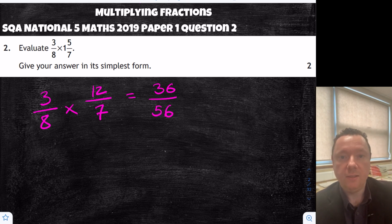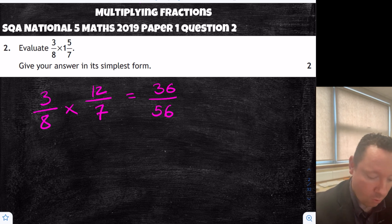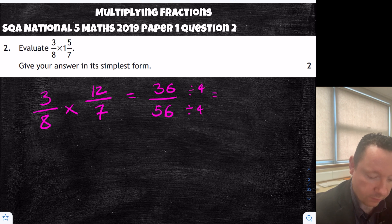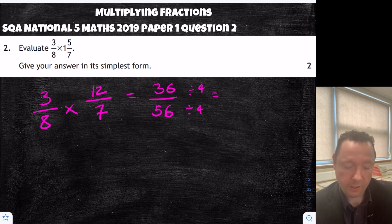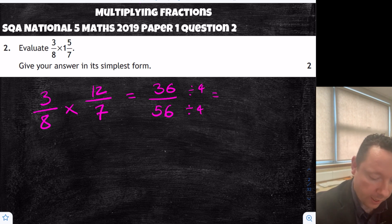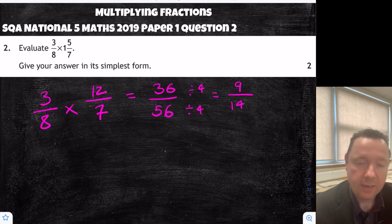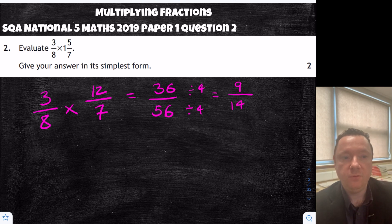So now we need to find a way to simplify that. Let's try and divide by 4 — although you could just divide by 2, then 2 again. 4 into 36 is 9, and 4 into 56 goes 14 times, so we get 9 fourteenths, and we're done there.